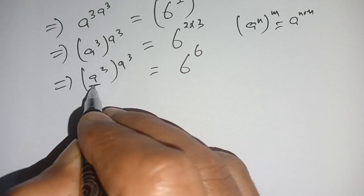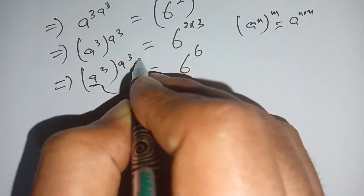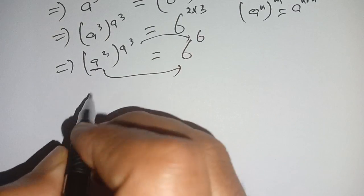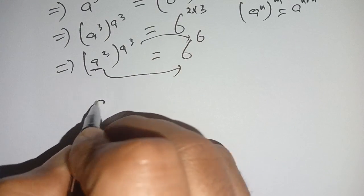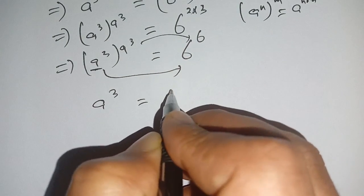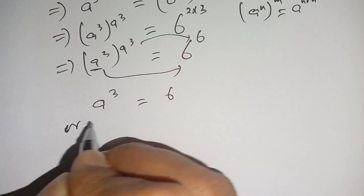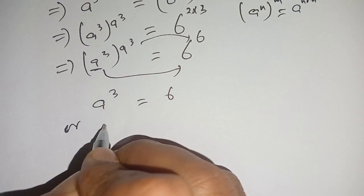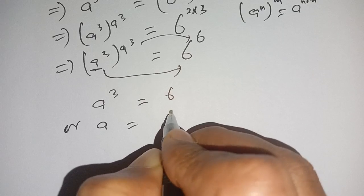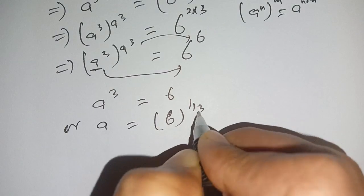So we can write this as a power 3 is equal to 6, or we can write this as a is equal to 6 power 1 divided by 3.